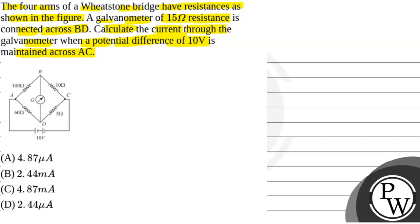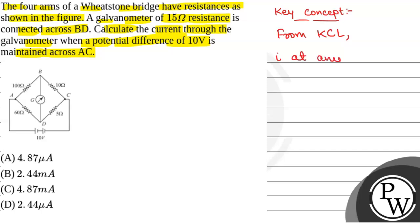First of all, we will see what will be the key concept used to solve this question. The key concept will be Kirchhoff's Current Law, that is KCL. At any junction, the sum of all currents is zero: I = I1 + I2 + I3 + ... = 0.